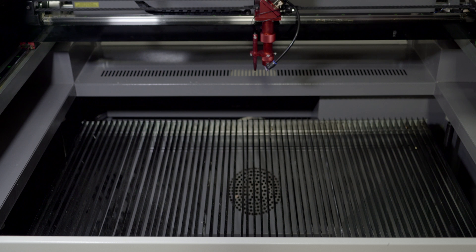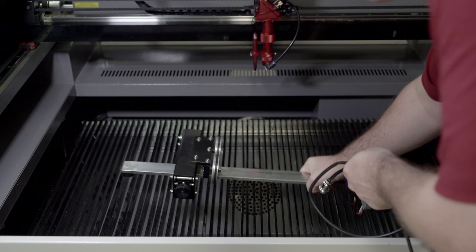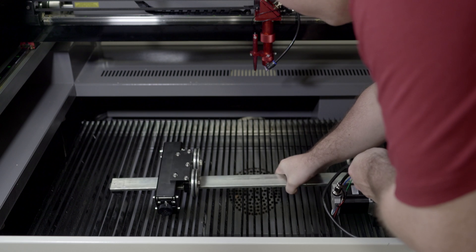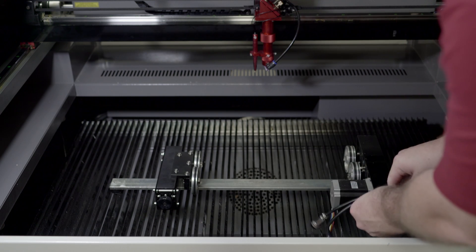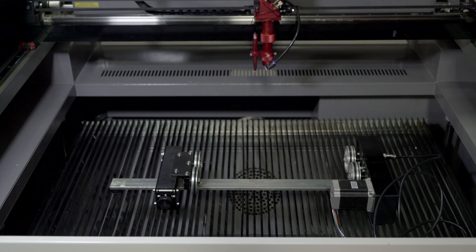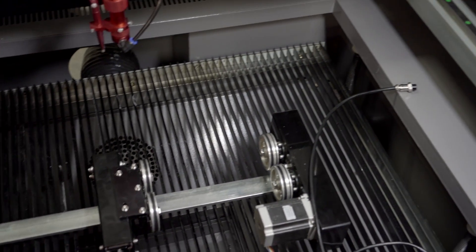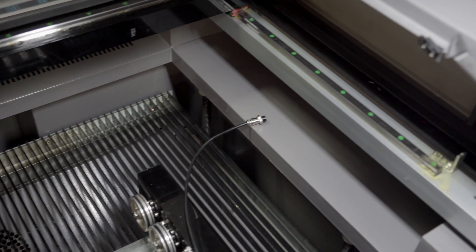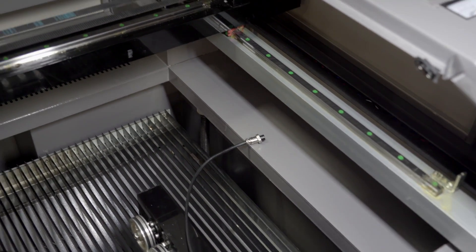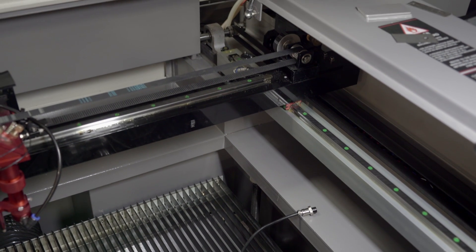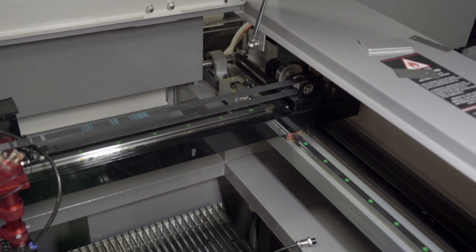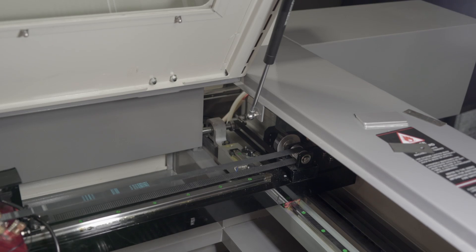First, set your rotary in the center of your table. Run the cable to the back of your machine. Make sure that you run it underneath the X gantry and avoid the gears in the back of the machine. Make sure that your machine is turned off before disconnecting the cable and plugging in your rotary.